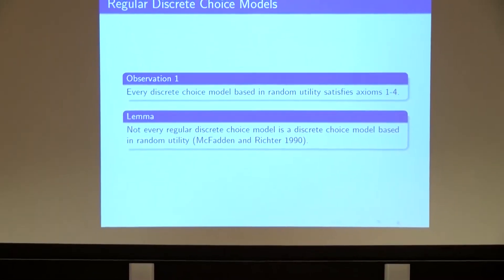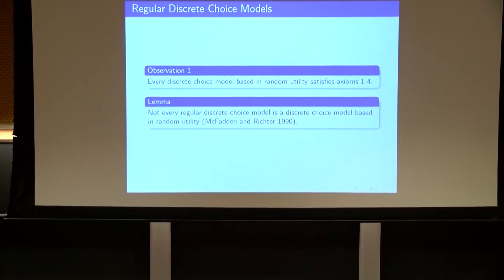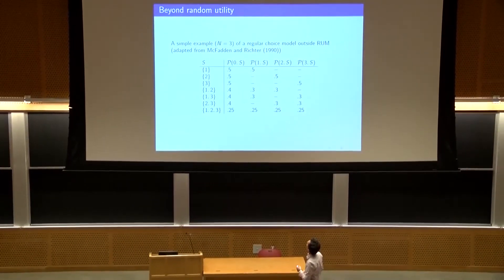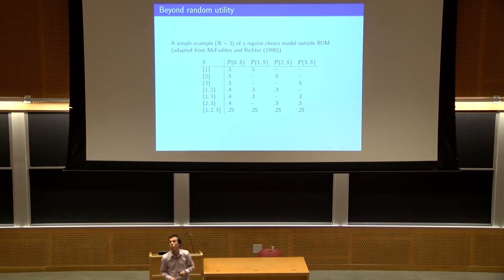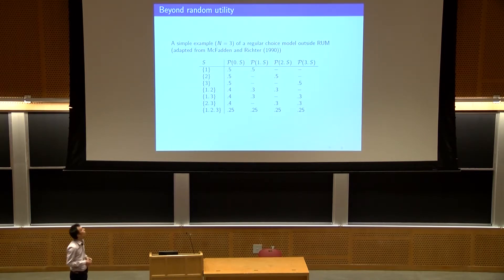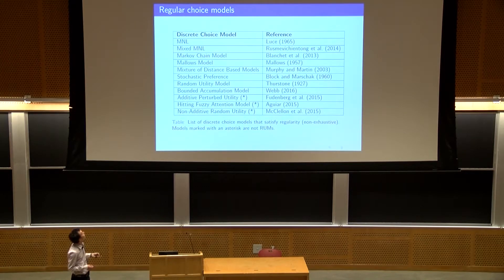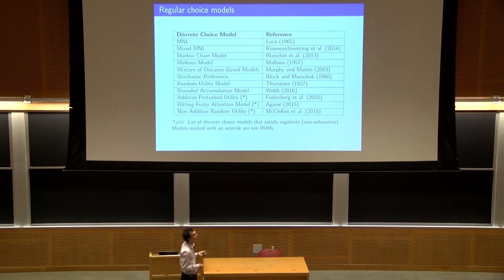Every random utility model satisfies this regularity condition, but the reverse is not true. Even for n equal to 3, there exists a simple regular discrete choice model satisfying regularity that is easy to prove — using a lemma about submodularity of the demand function of random utility models — is not a random utility model. There is a list of discrete choice models that are regular, and the last three are quite recent and are not random utility models.